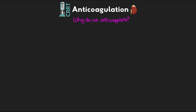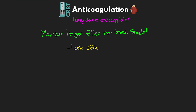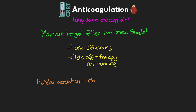The whole purpose for using anticoagulation is going to be to maintain longer filter run times — it's that simple. If our filter is clotting, we're losing efficiency, and when it actually clots off there's a period of time where the therapy is just not going to be running. At its core, the problem is related to clotting, which is typically the result of platelet activation, activation of the clotting cascade, and ultimately obstruction of those hollow membrane fibers in the CRRT filter.